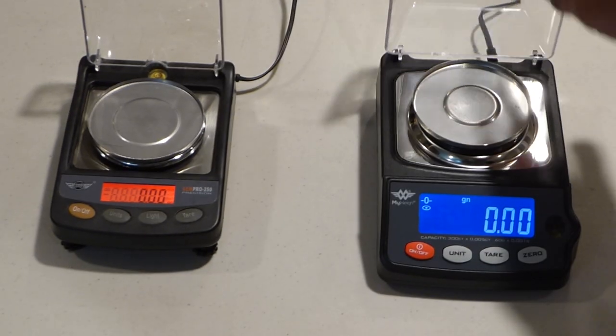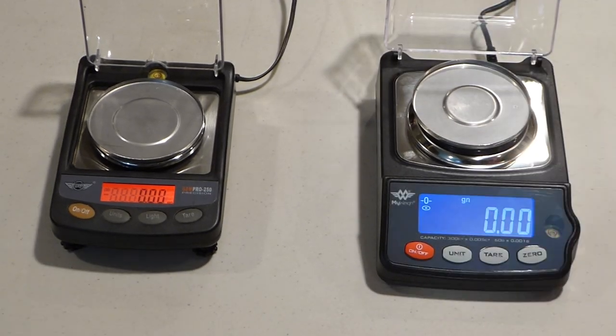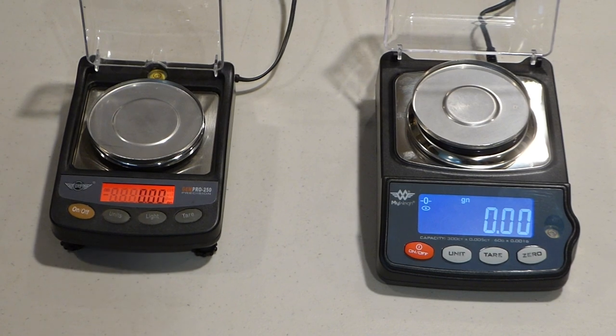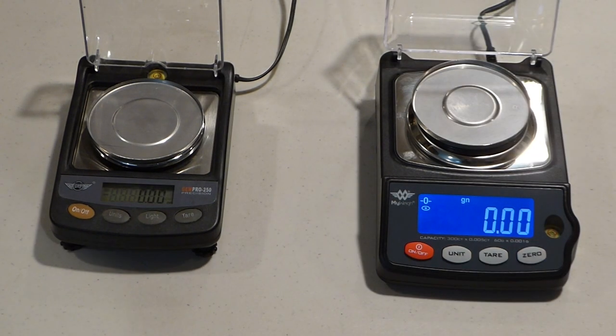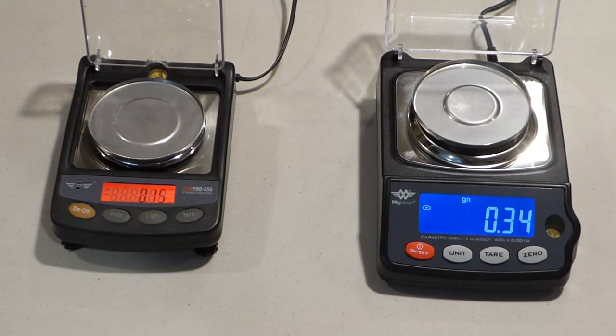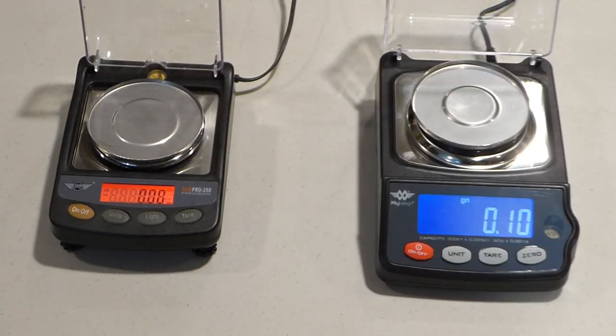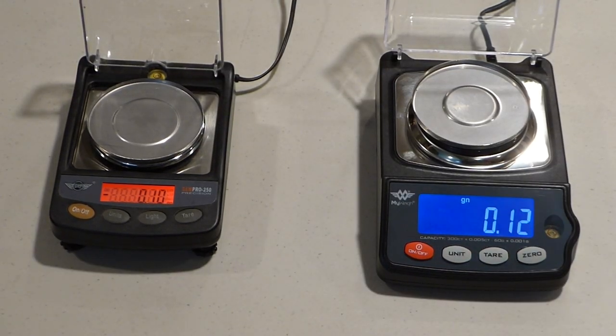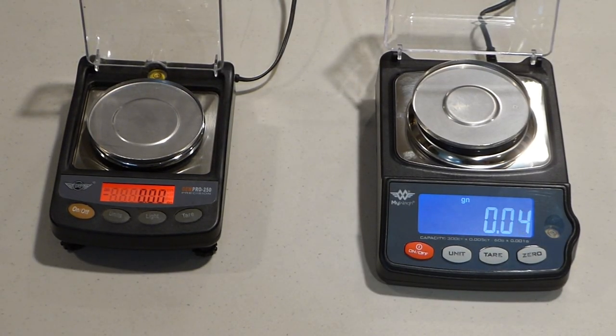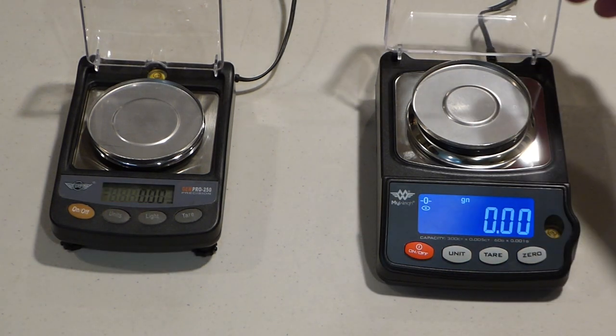Both scales have lids to help eliminate any variants you're going to see in readings from wind currents. Just moving your hand across the scales, you can see the wind is going to change it. So if you have the air conditioner on, or a fan going, or anything like that in the room, it's going to affect the accuracy of these scales. So for the best readings, you need to shut the lid.